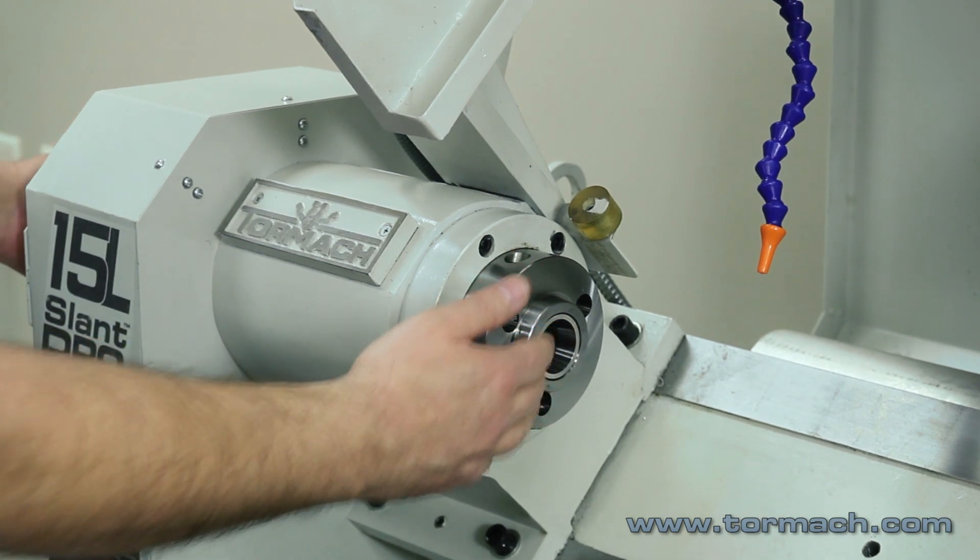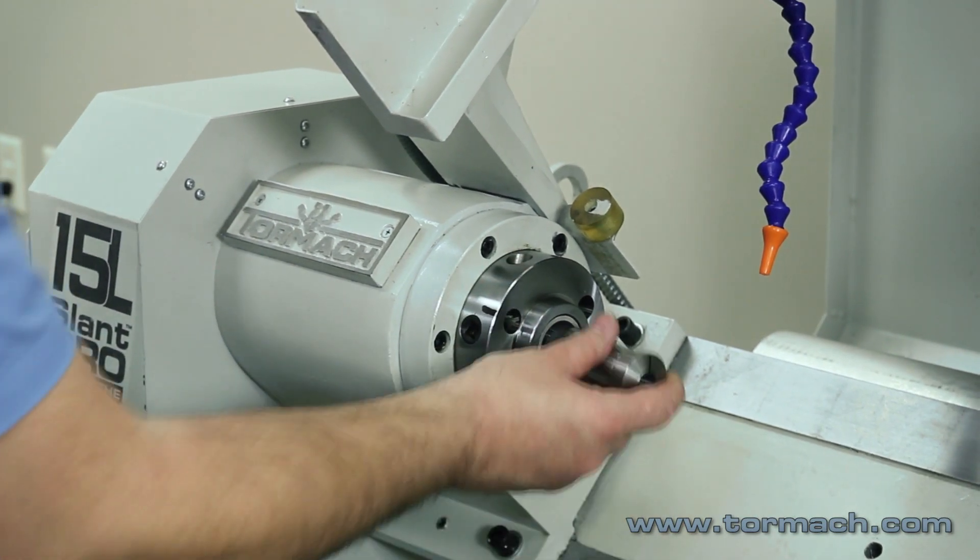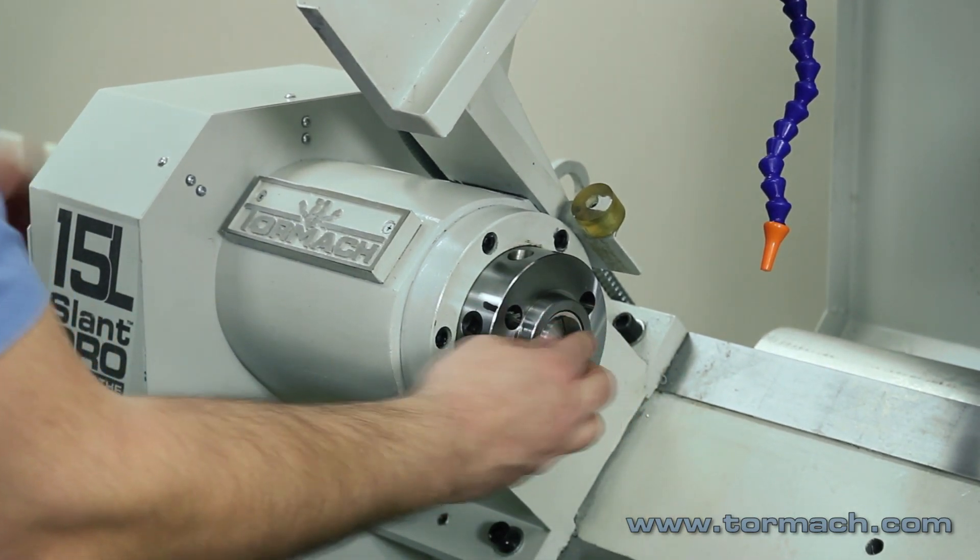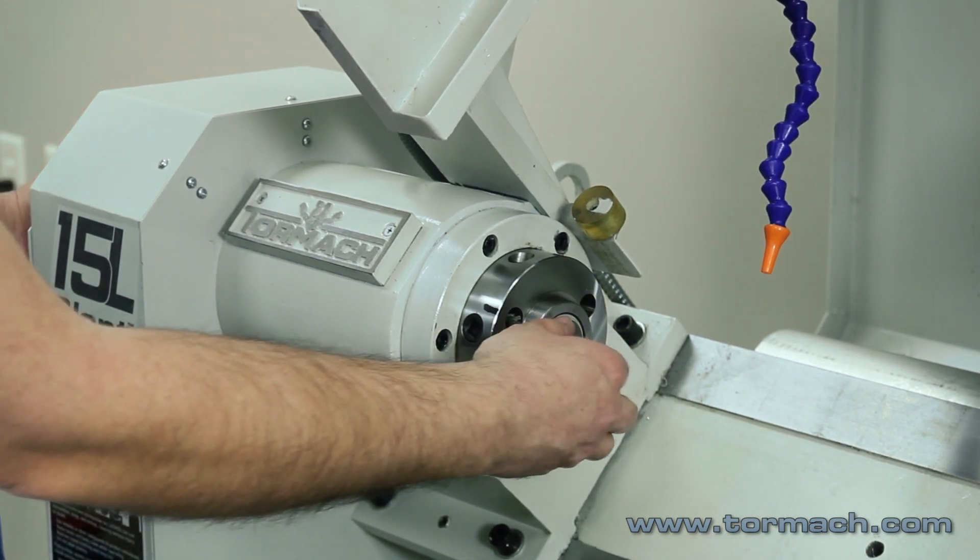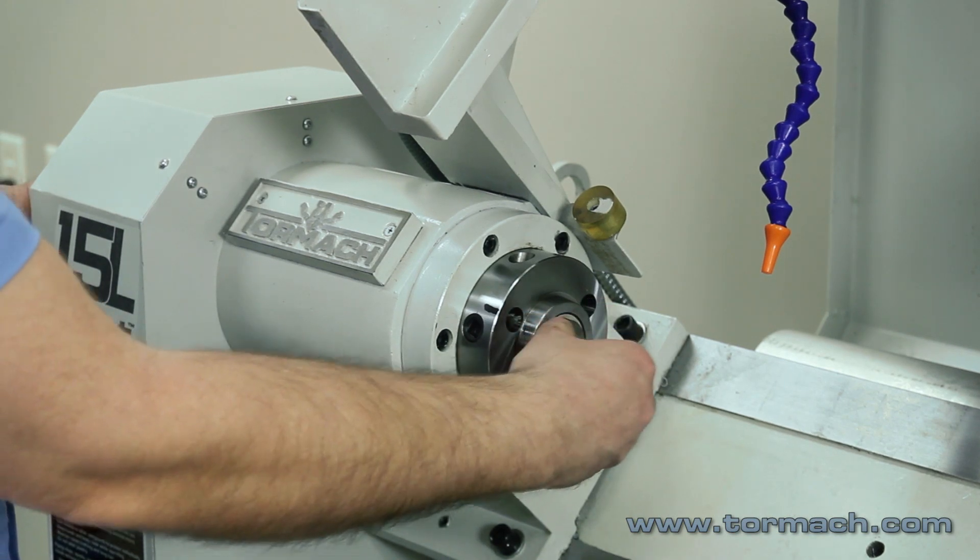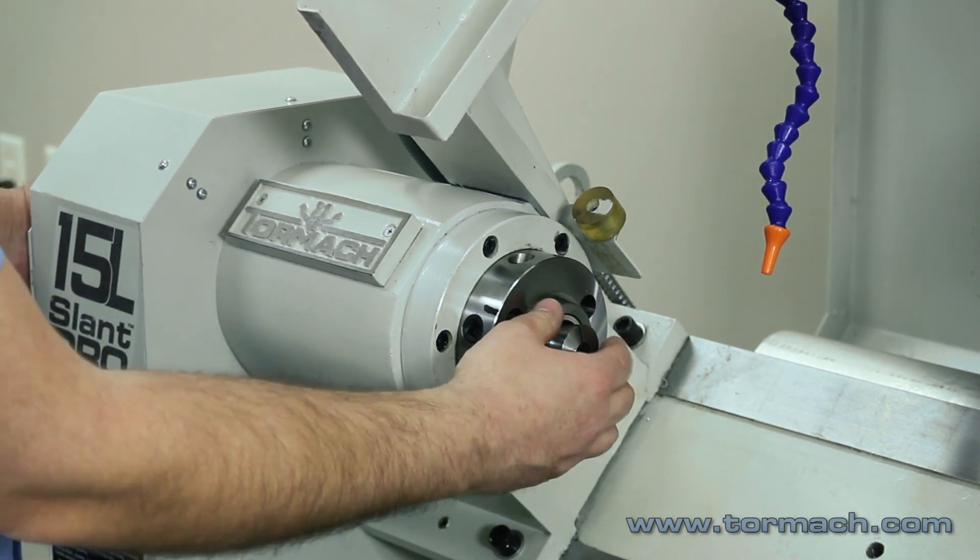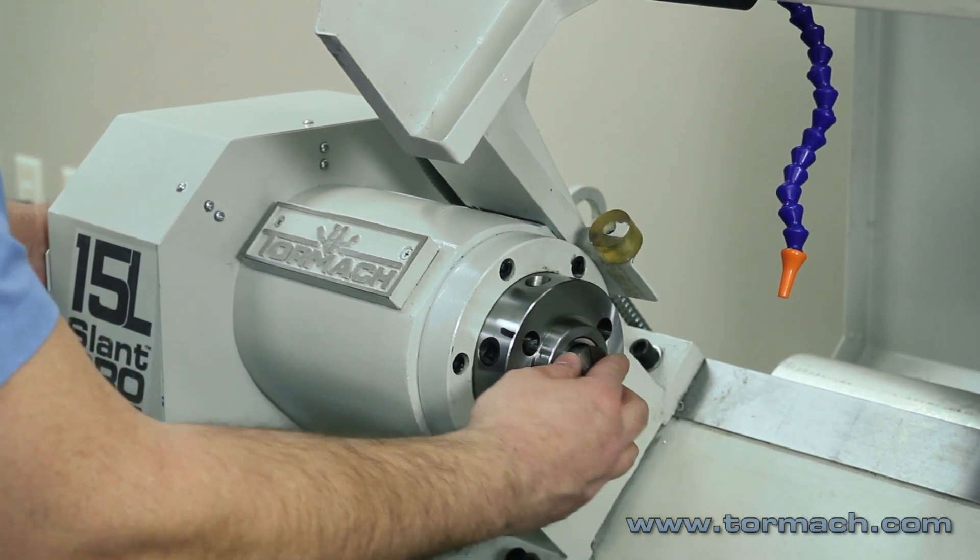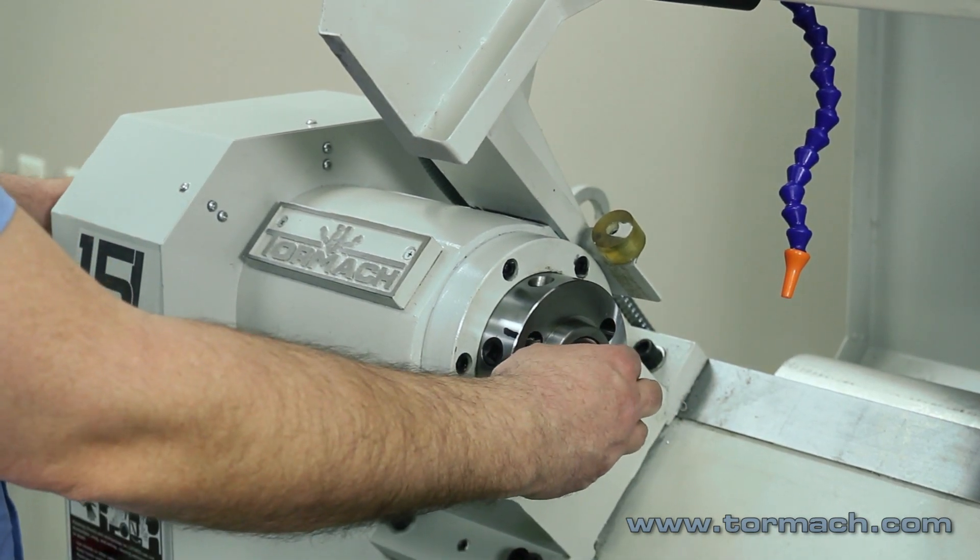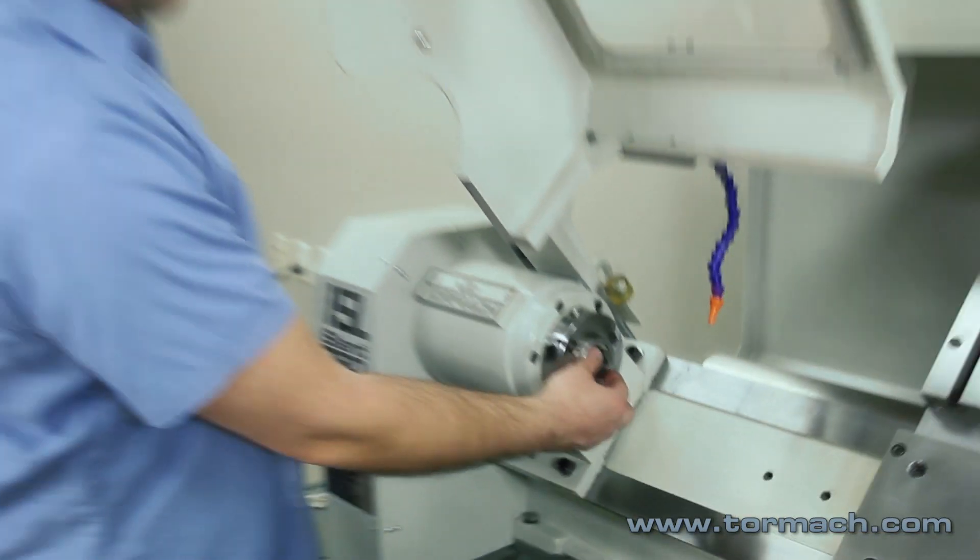As you put a collet in and then draw it up tight with the draw tube, it will make sure that that collet adapter is seated 100%. So if you're not sure you got it in there all the way, as long as you got it pretty snug, when you draw it up tight with the draw tube, it will seat.